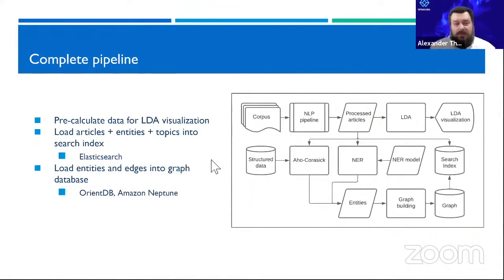Here's the full pipeline. We come in with our corpus, we do our NLP pipeline, and that gives us our processed articles. This is our normalized tokens for entity extraction and our lemmas for topic modeling.